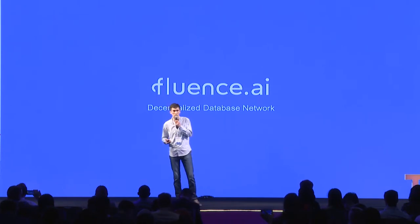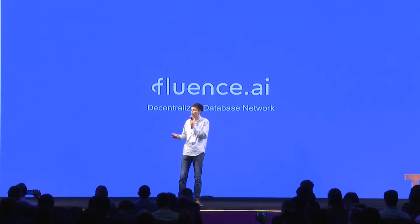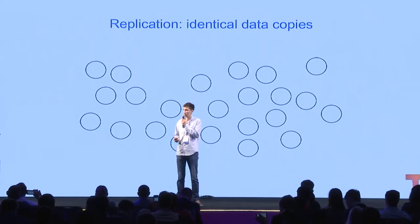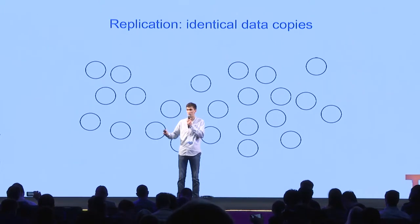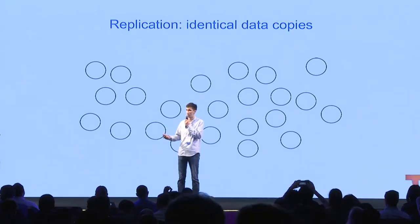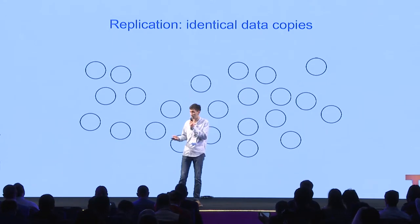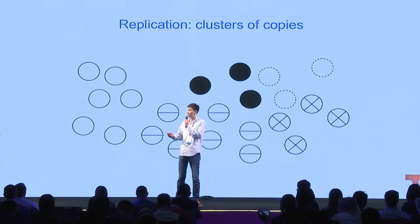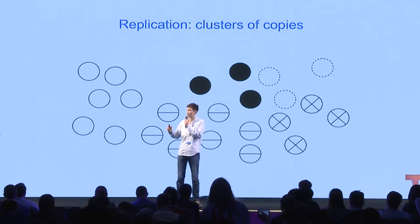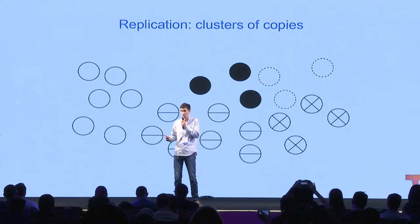That's where a decentralized database network can be useful. Let me give you a quick impression of how it could be built and what challenges we have. The first thing is data replication. Blockchain, by design, is a fully replicated database — every node keeps the same copy of the whole blockchain, and that's why it doesn't scale. For a decentralized database, we can pick small groups of nodes responsible for a particular part of the data, organizing machines into clusters. This way, we can store almost any amount of data by creating new clusters for new datasets.